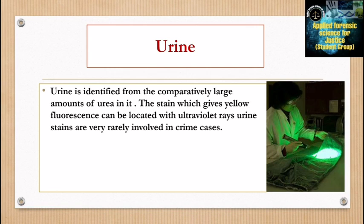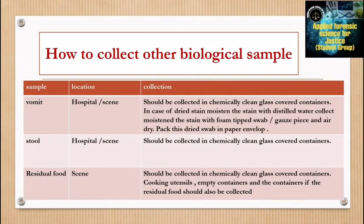Urine is identified by the comparatively large amount of urea in it. Stains showing yellow fluorescence can be located with ultraviolet rays. Urine stains are very rarely involved in crime scenes. To collect other biological samples: for vomit at a hospital or crime scene, collect in chemically clean glass covered containers; for dried stains, moisten with distilled water, collect with a foam-tipped swab or gauze, air dry, and pack in a paper envelope. For stool, collect in chemically clean glass covered containers. For residual food, collect in chemically clean glass covered containers along with cooking utensils and empty containers.